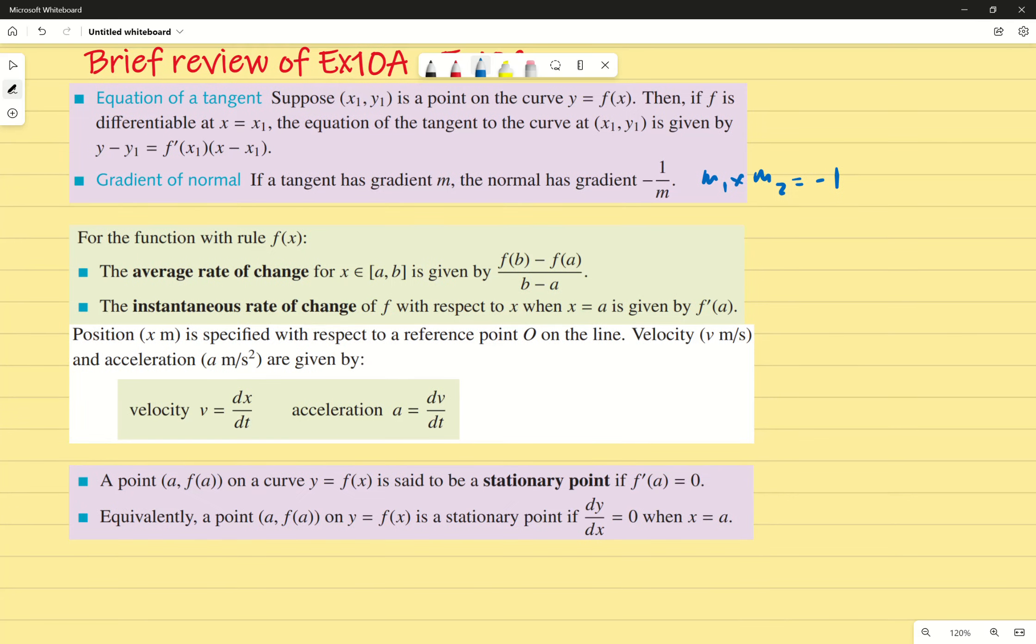Finally, we've got a point on a curve which we need to define as a stationary point if f'(x) equals zero. Of course, it could be f'(a)—that's just specific notation. Any corner where the derivative equals zero is a stationary point, and we're going to determine what kind of stationary point it is next.